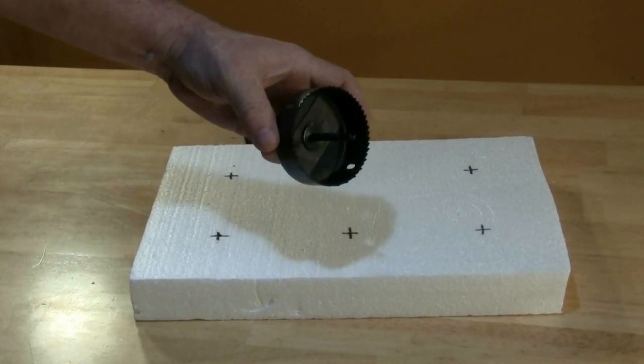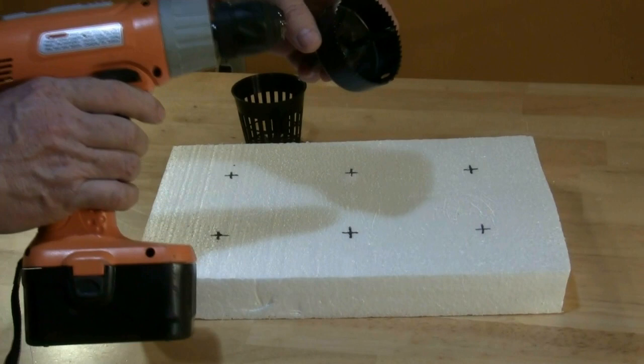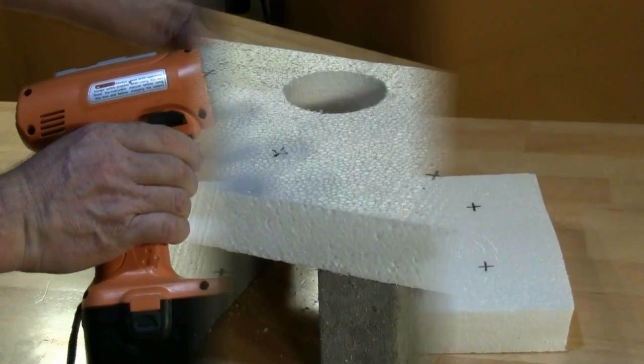To cut out the holes for the net pots, use a drill with a hole saw bit slightly smaller than the size of your pots.